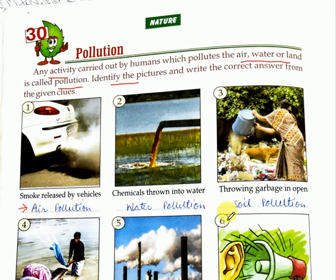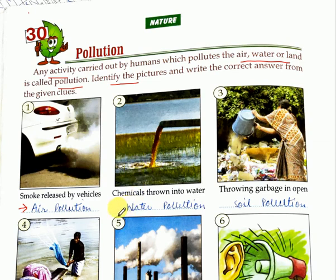Secondly, you can see that chemicals are thrown into the water by the factories and industries. So it is polluting the water. The answer will be water pollution.